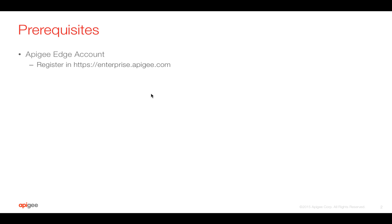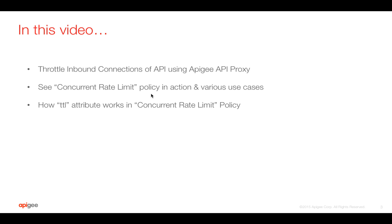Prerequisites: you need an Apigee Edge account to follow this tutorial. Register at enterprise.apigee.com, which is free. In this video we are going to learn how to throttle inbound connections of an API using an Apigee API proxy, how the concurrent rate limit policy works and its various use cases, and we'll also learn about the TTL attribute and how to throttle a certain number of inbound connections.